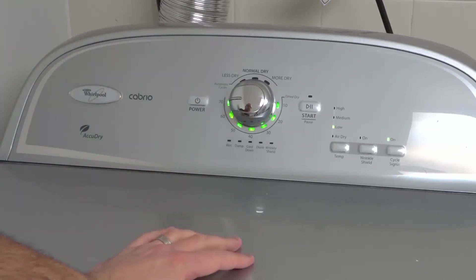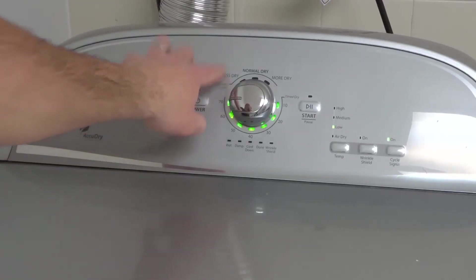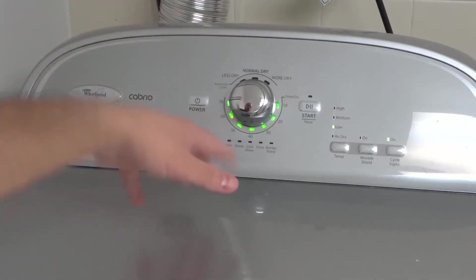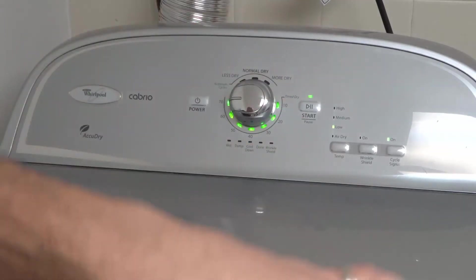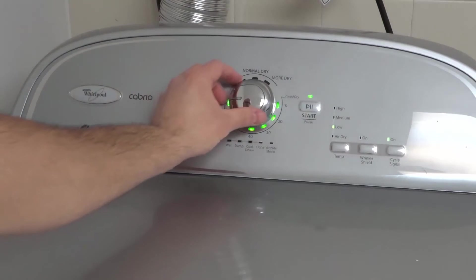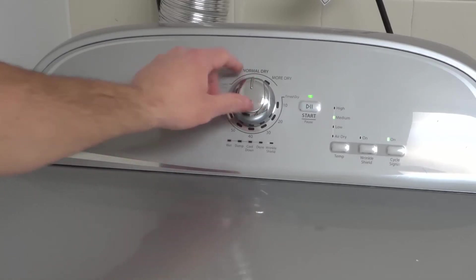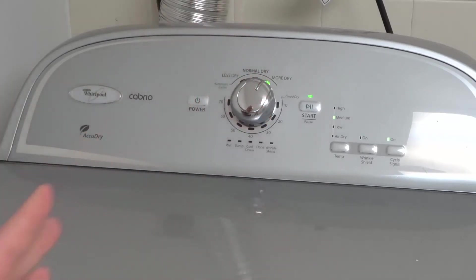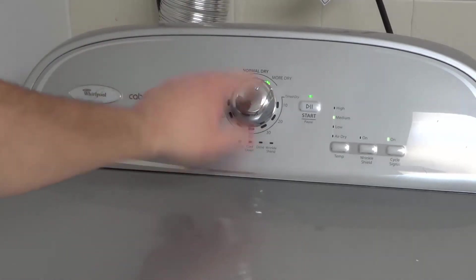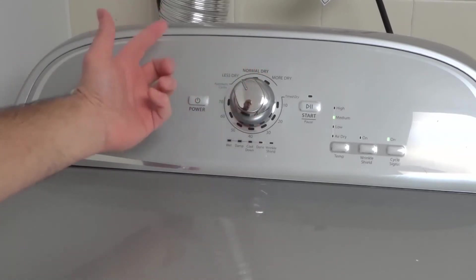Or you can do the automatic cycles. So the automatic cycles are going to figure out when the clothes reach the dryness level that you're looking for. So I can go up here to less dry, or I can go to normal dry, or I can go more dry. And those will basically continue drying until it is either more dry, a normal amount of dryness, or less dry.